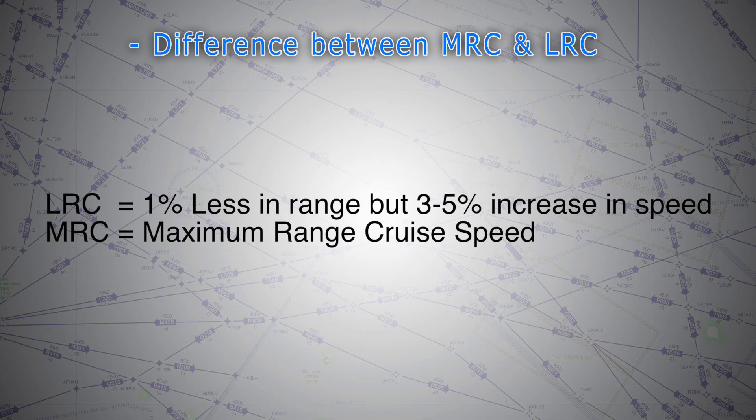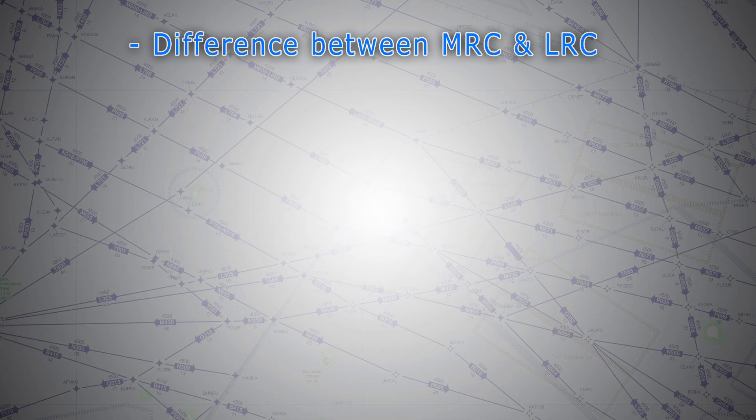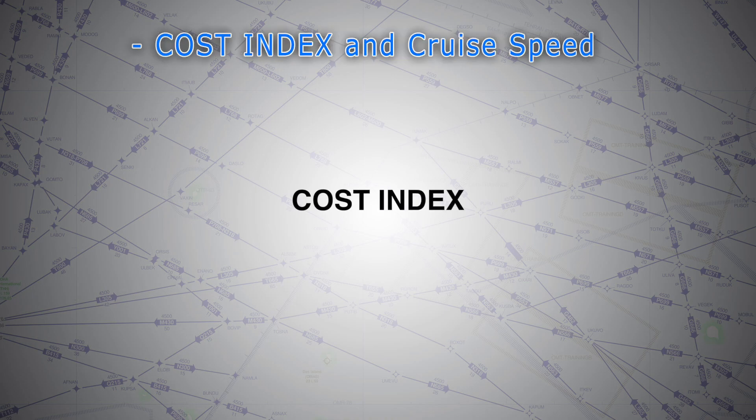All right, but when jet fuel prices go up, airlines often fly at economy cruise settings instead of LRC. These settings are called cost index. They balance the cost of fuel against the other hourly costs of operating the aircraft.